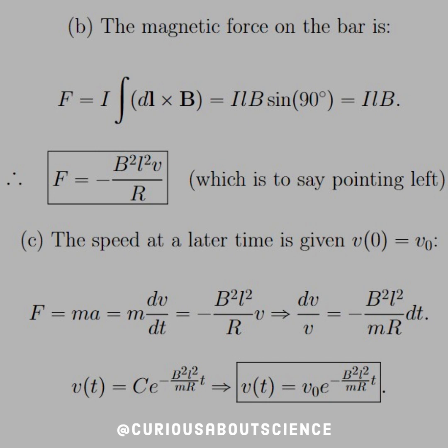So the speed at a later time is given with the initial condition V at zero equals V naught. Well, we have to use the force law to find what V is. Because F equals MA, and A is equal to dV/dt, but we also just found what the force was in part B, so now we can set the two equal to each other and solve for V.